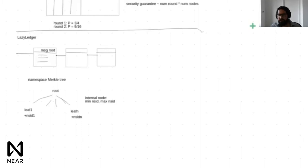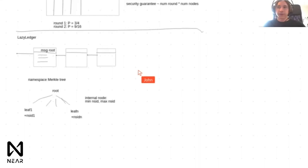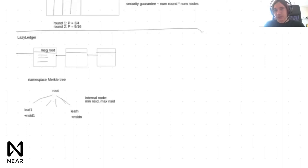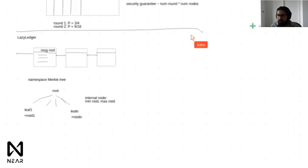Shared data availability guarantees let you construct fraud proofs that allow secure light clients for one virtual sidechain to talk to another — essentially treating them like shards. Lazy ledger natively shards processing because lazy ledger validators don't process anything. It also allows you to shard execution and state naturally, since lazy ledger validators don't store any state. However, it doesn't shard networking — all messages from all virtual applications still go through the same ledger.